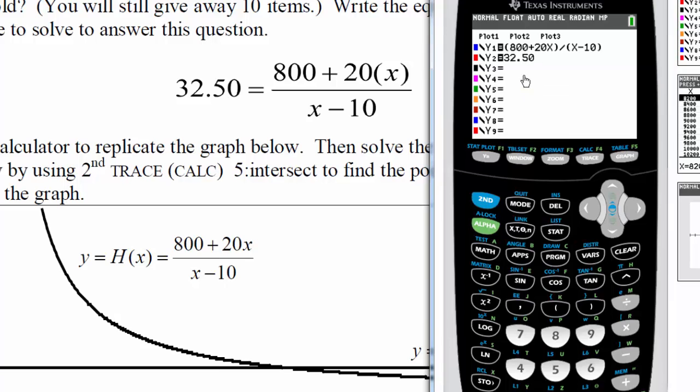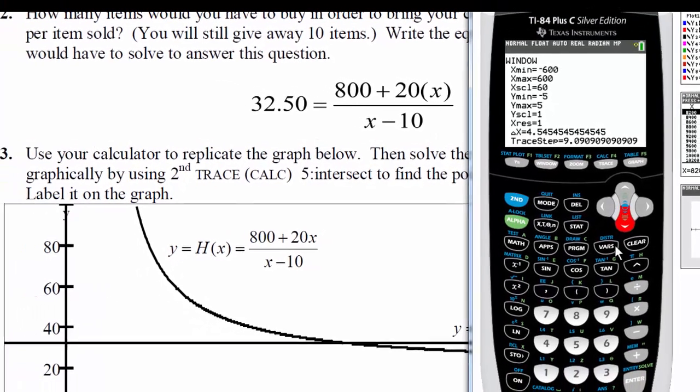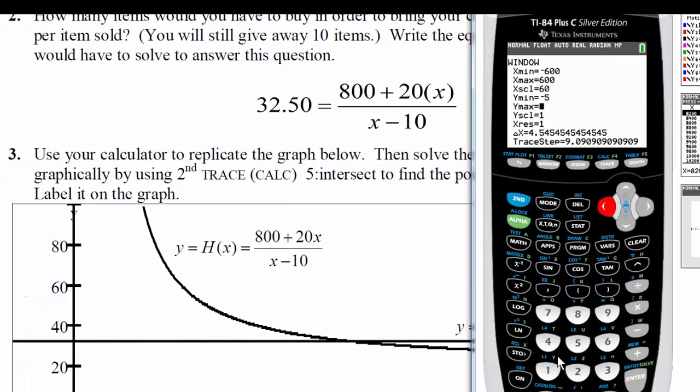Now, we do need an appropriate window. And if I look at their graph, it looks like they're going from zero to maybe 100. So when I look at my y min and y max, I'll start at zero. And I'm going to go out to 100. And we don't have to change the scale, but I'm going to count by tens.